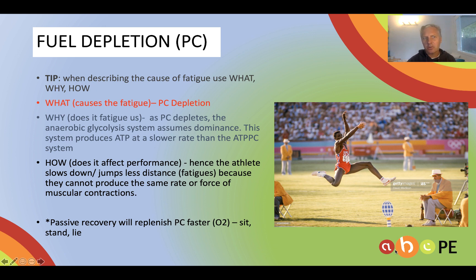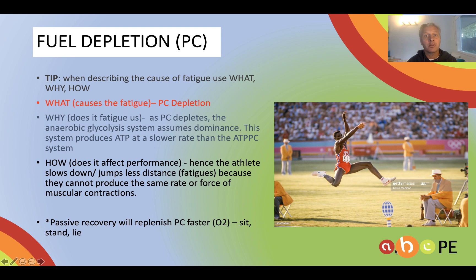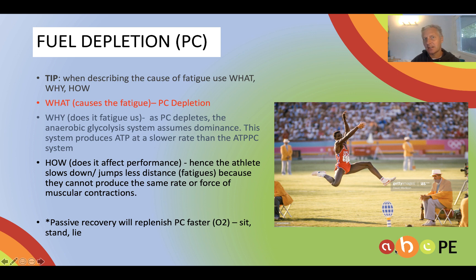My tip would be to try and break things down into the what, why, and how. What causes the fatigue? In this instance, PC depletion. Why does it fatigue us? The PC depletes and therefore the anaerobic glycolysis system increases its contribution, and this system produces ATP at a slower rate. And then finally, how does it affect performance? The athlete slows down because they just can't complete the contractions as quickly or as forcefully.